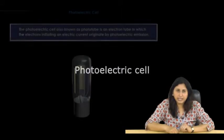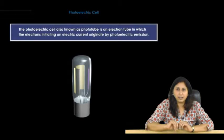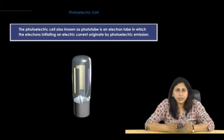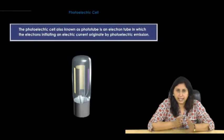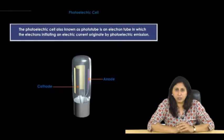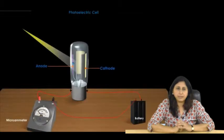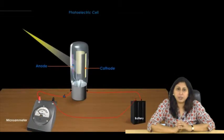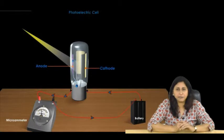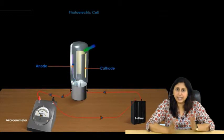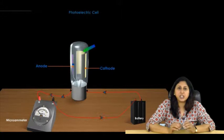Photoelectric cell. Now we shall look at the photoelectric cell. The photoelectric cell, also known as the phototube, is an electron tube in which the electron initiating an electric current originates by photoelectric emission. A phototube consists of a cathode coated with a photosensitive material and an anode. Light falling on the cathode causes the liberation of electrons, which are then attracted to the positively charged anode, which results in the flow of current. Now these phototubes are either evacuated or filled with an inert gas at low pressure to achieve greater sensitivity.